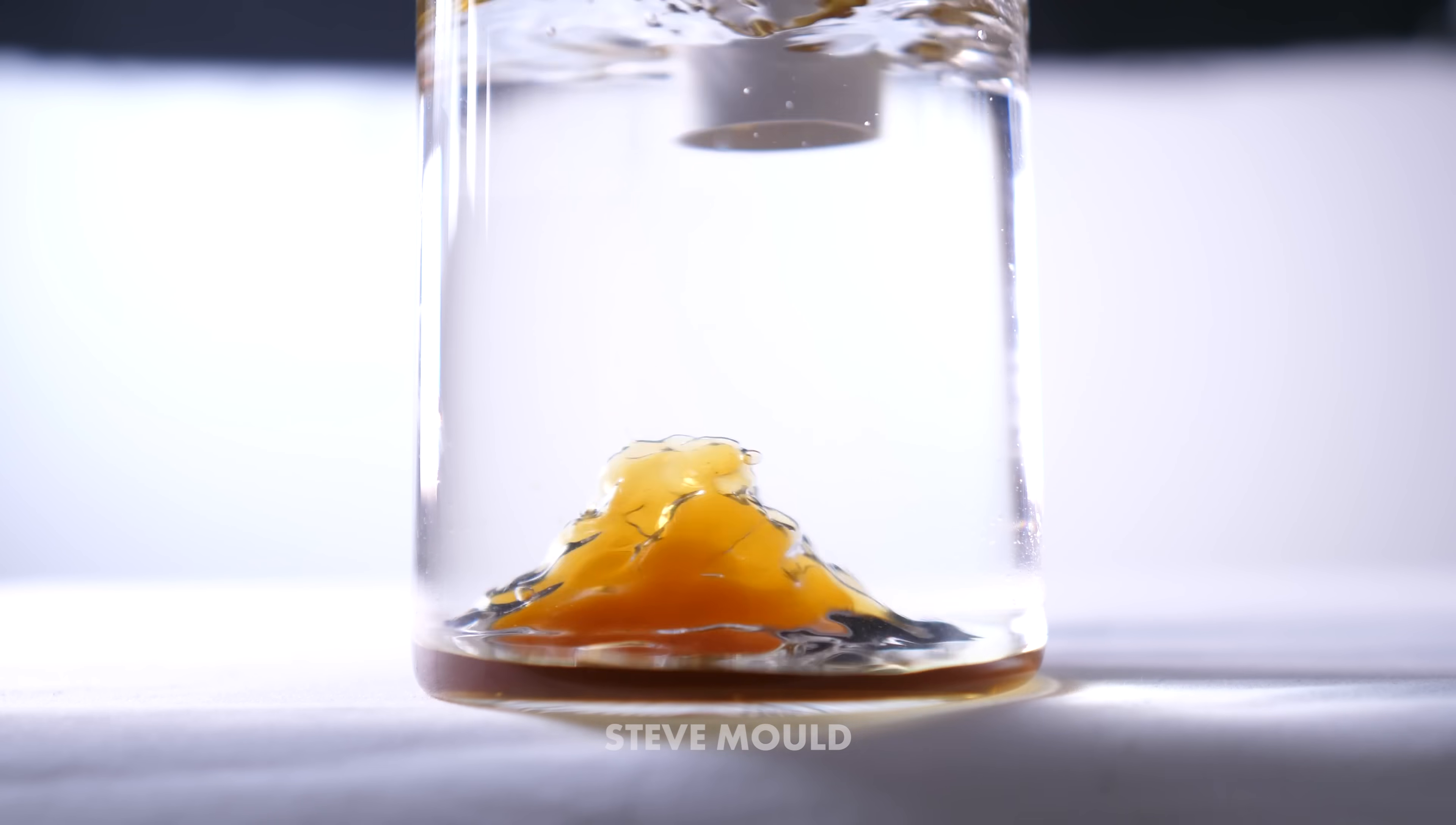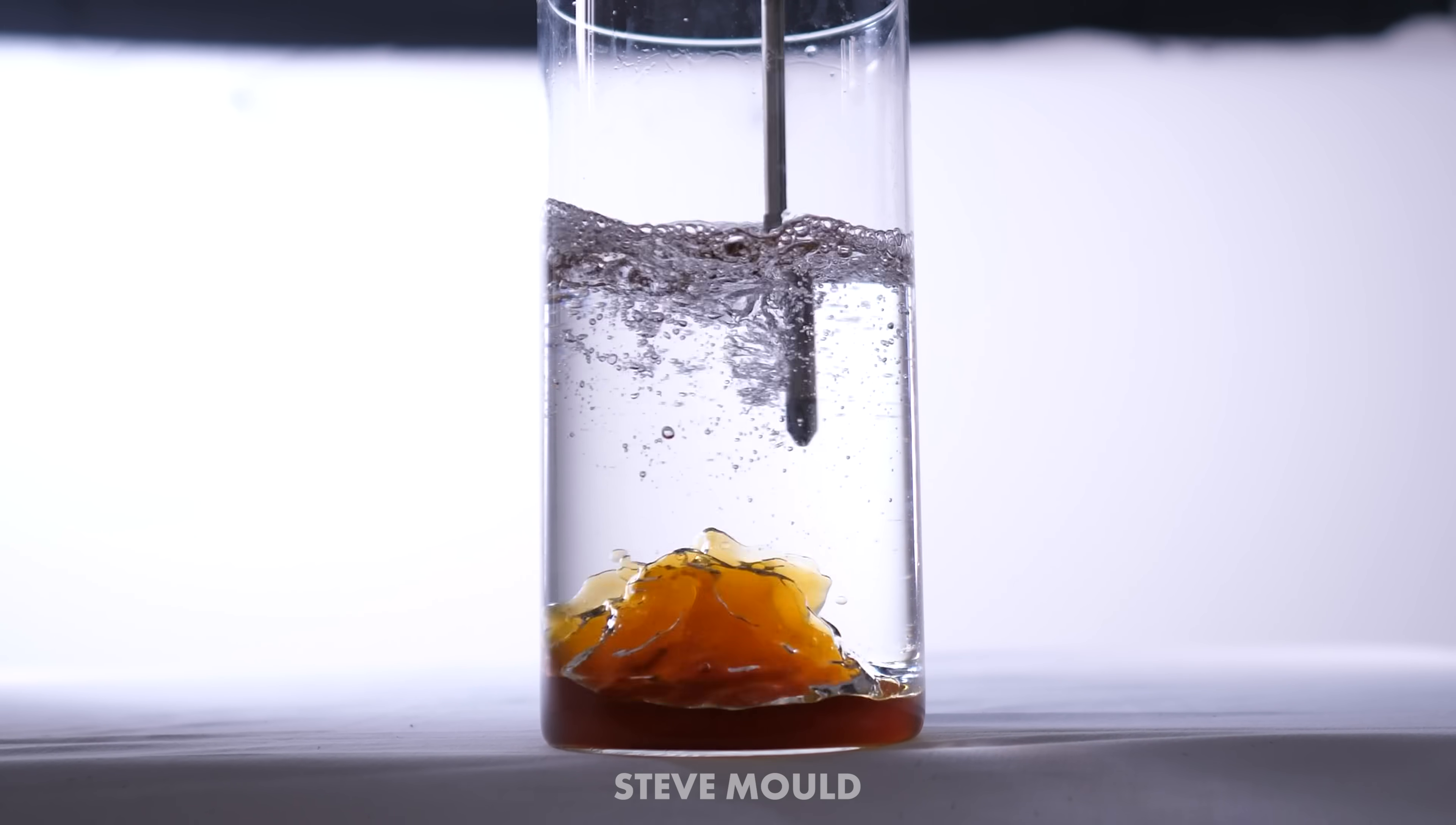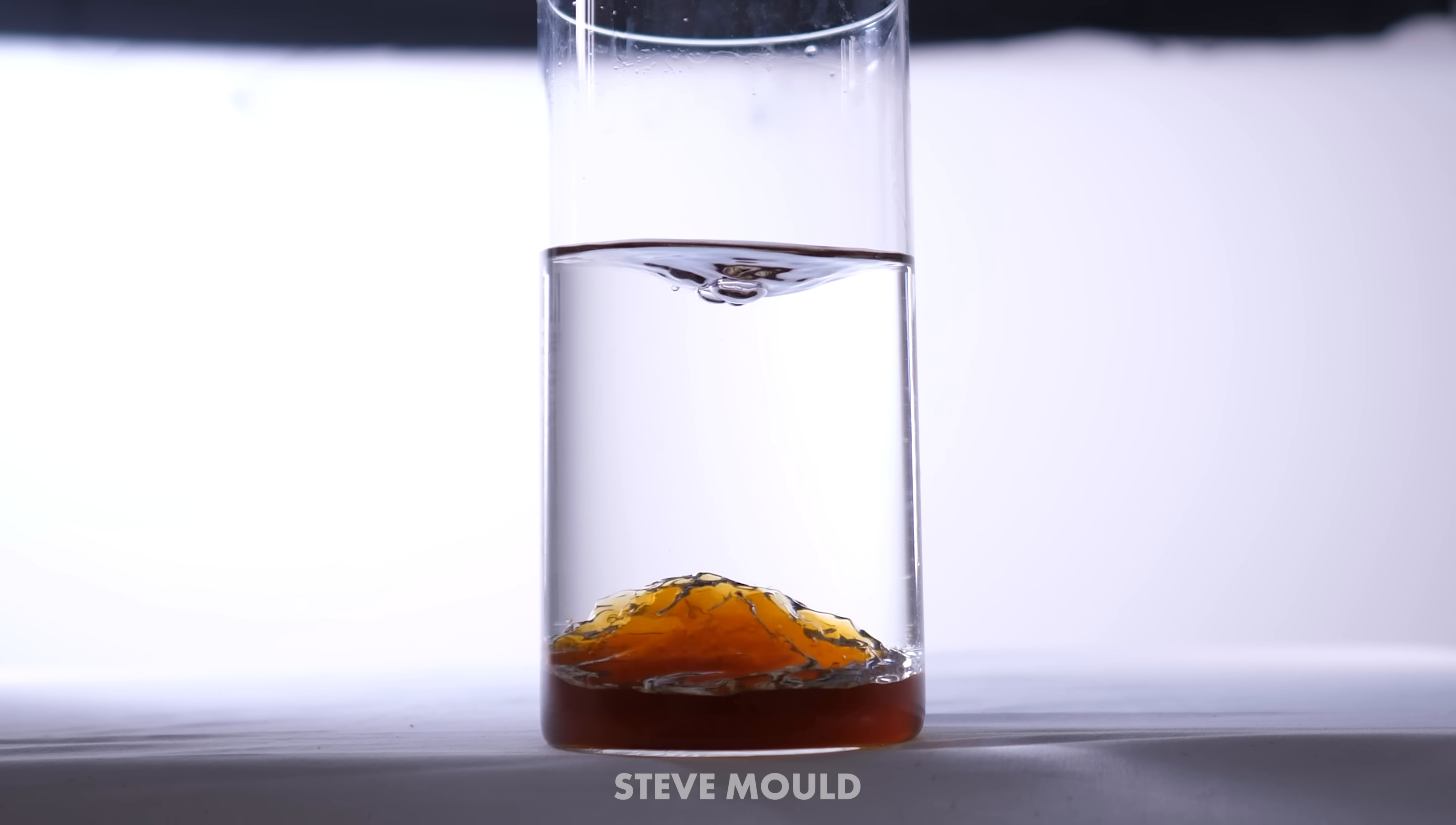I haven't actually told you what these fluids are yet, have I? The fluid on the bottom is water—I've dyed it brown, fittingly, with tea leaves. And the top fluid is white spirits. You might call it mineral spirits. White spirits are made of short chain hydrocarbons, so a lot like oil. It's hydrophobic, it doesn't mix with the water at the bottom, and like oil it's less dense than water so it floats on top.